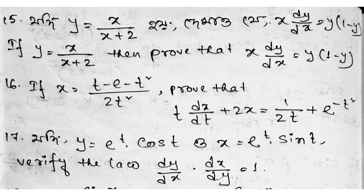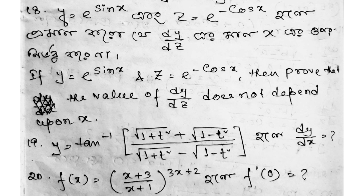Question 15: if y equals e to the power t times cos t and x equals e to the power t times sin t, verify that dy/dx times dx/dy equals 1. This is a very important recursion. Question 16: y equals e to the power sin x and z equals e to the power minus cos x — prove that dz/dy is independent of x.